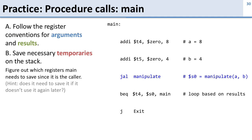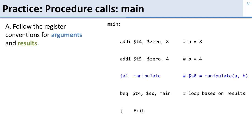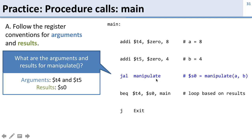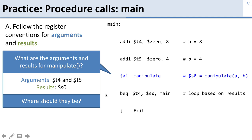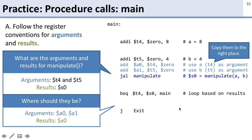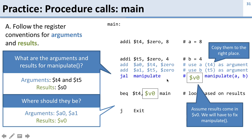Let's look at main and fix it to follow the conventions for arguments and results and save the necessary temporaries onto the stack. The arguments for manipulate are a and b, currently placed in t4 and t5, and the result comes back in s0. According to convention, arguments should be in a0 and a1, and results come back in v0. So we copy t4 and t5 into a0 and a1, change manipulate to return results in v0, and update our code to use v0.